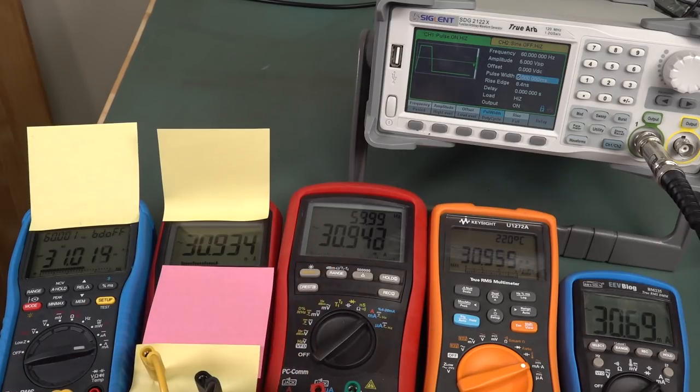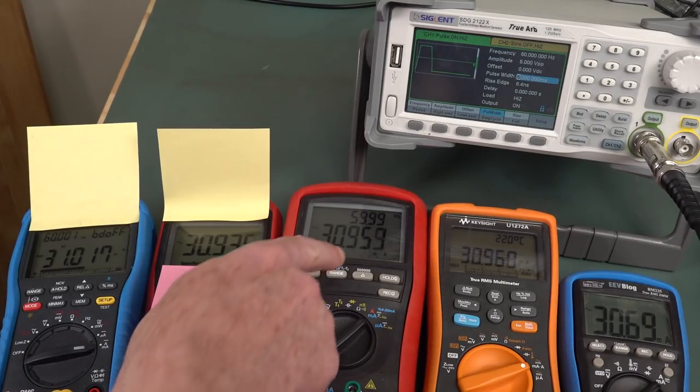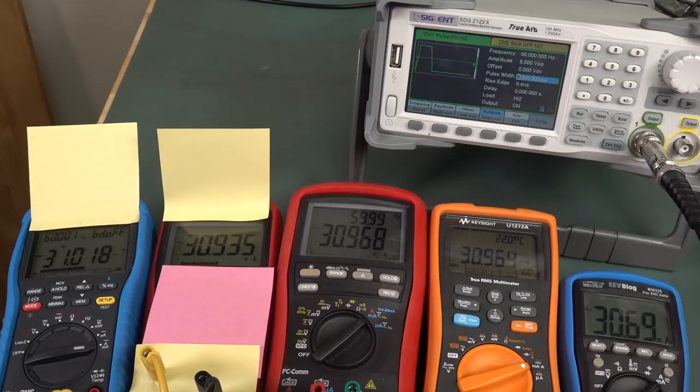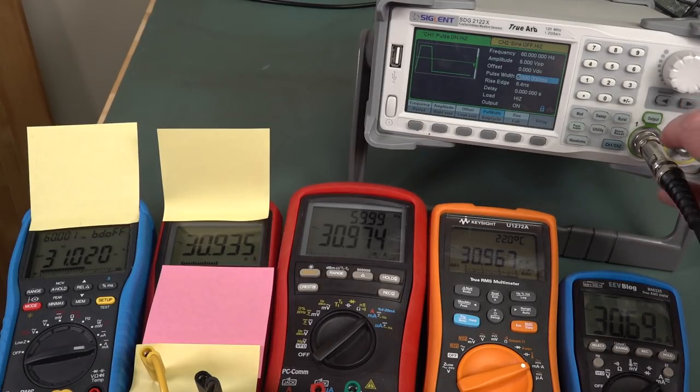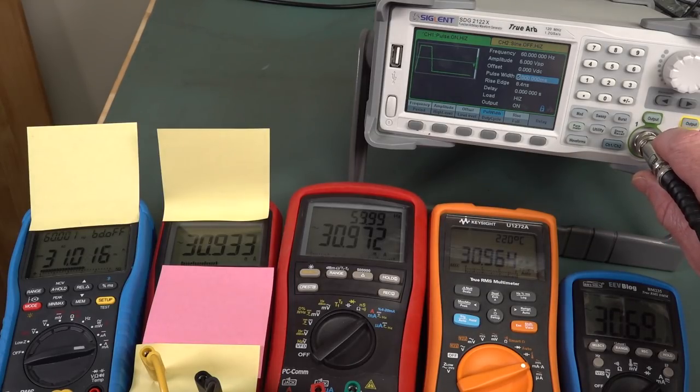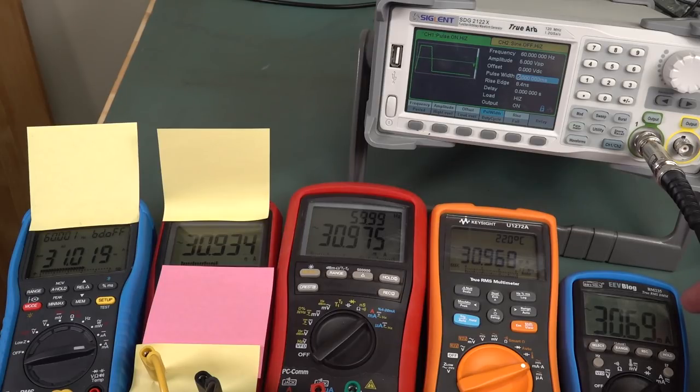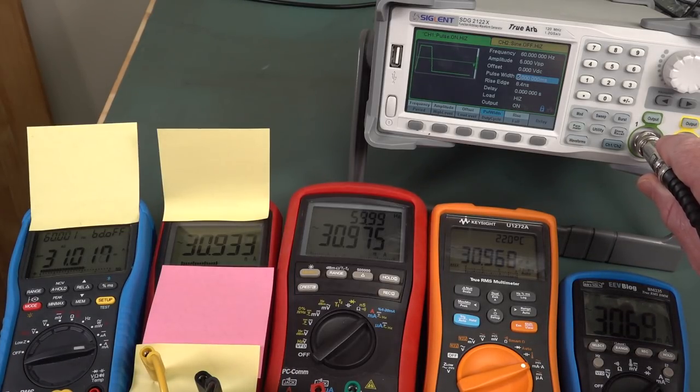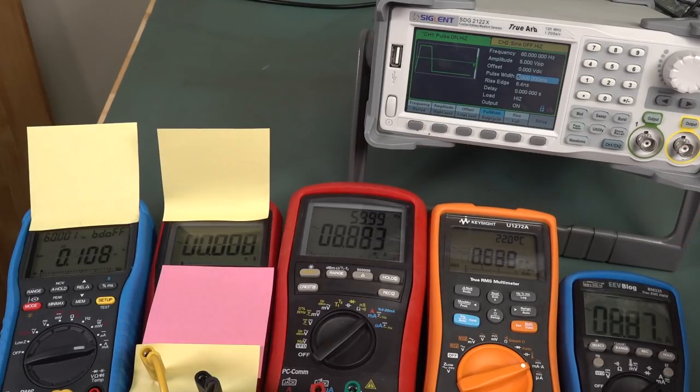And you'll notice that the BM869 takes quite some time to settle. It gets close pretty quickly, but it's only just sort of decided to settle now. And yes, the BM235 is going to read a bit lower because this doesn't quite have the bandwidth and the proper true RMS converter chip that the other meters have. So yeah, that's interesting.